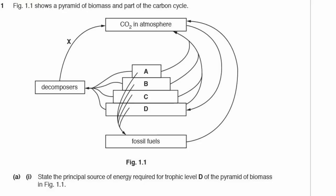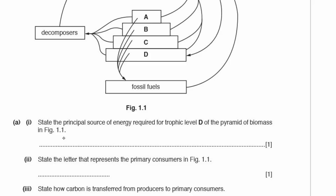Question 1. Figure 1.1 shows a pyramid of biomass and part of the carbon cycle. We have our pyramid here, and everything outside of the pyramid is the carbon cycle. Question A1: State the principal source of energy required for trophic level D of the pyramid of biomass. Trophic level D is the biggest one — those are the producers, so they get their energy from sunlight.